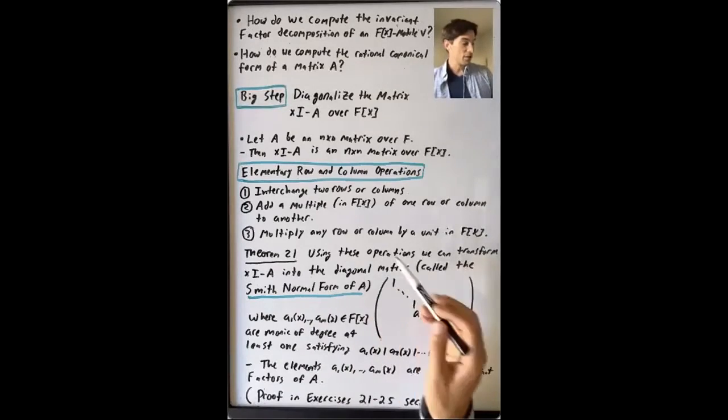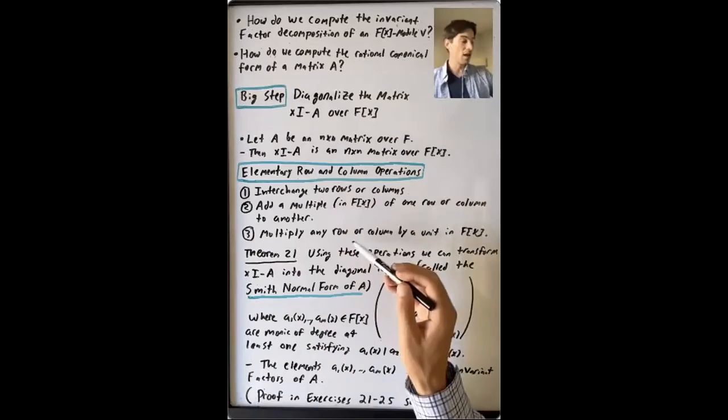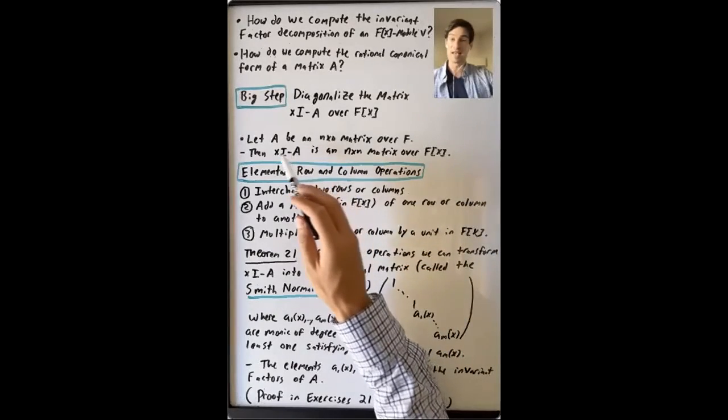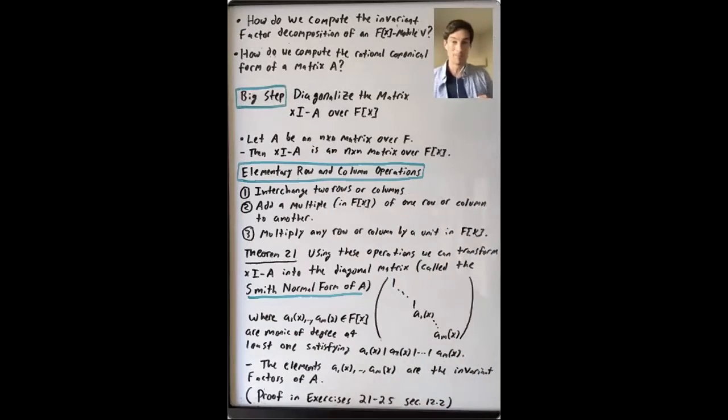So this theorem says that we can do these elementary row and column operations to transform our matrix x times I minus A into a matrix of this form. But it's not always so obvious how to do that.